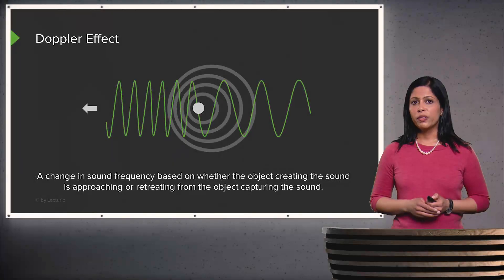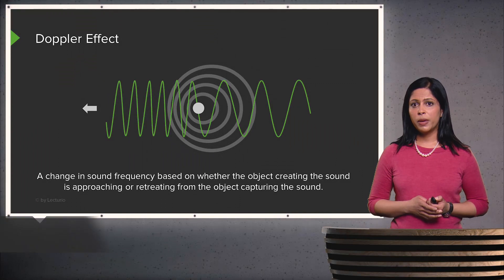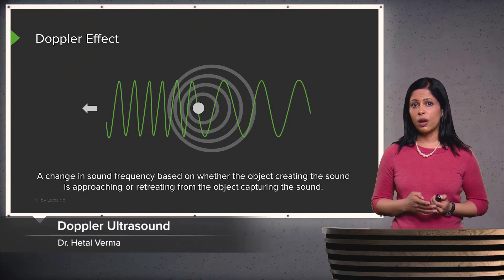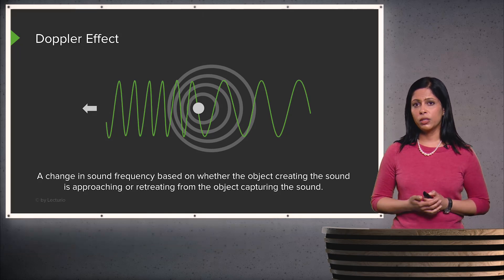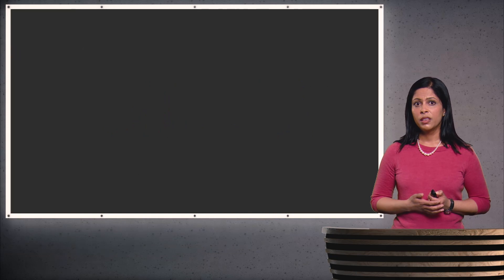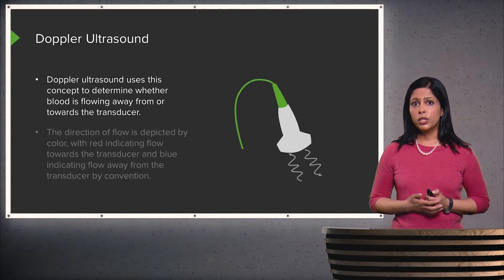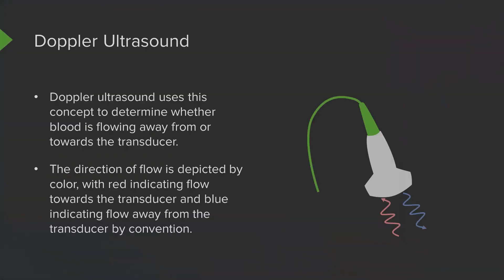You may have heard about the Doppler effect. The Doppler effect is the change in sound frequency based on whether an object creating a sound is approaching or retreating from the object capturing the sound. Doppler ultrasound is based on this concept to determine whether blood is flowing away from or towards the transducer. The direction of flow is depicted by color: red indicates flow towards the transducer and blue indicates flow away from the transducer.